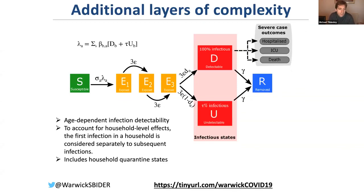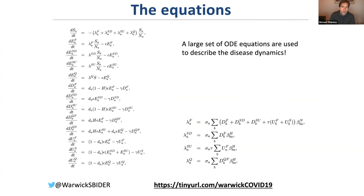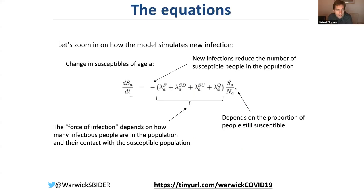The model also accounts for household effects — the first infection entering a household is treated separately from subsequent infections, because once there's an active infection in the household it's much more likely to spread to co-residents. Combining all of this gives us a large complex set of ordinary differential equations driving the disease dynamics. For example, the rate of change of susceptibles of age A is influenced by the proportion still susceptible and the force of infection from first infected, secondary detectable, secondary undetectable individuals, and those in quarantine.